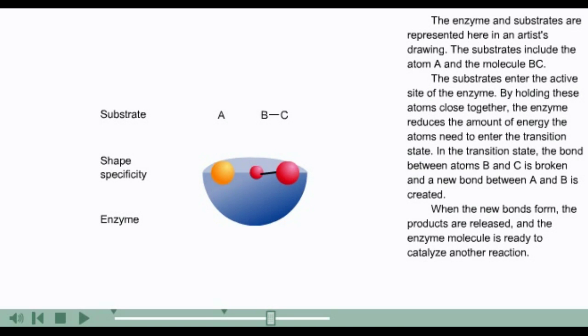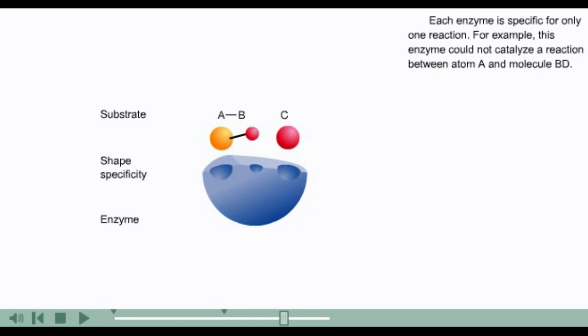In the transition state, the bond between atoms B and C is broken, and a new bond between A and B is created. When the new bonds form, the products are released, and the enzyme molecule is ready to catalyze another reaction. Each enzyme is specific for only one reaction.